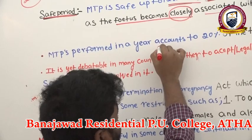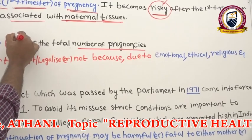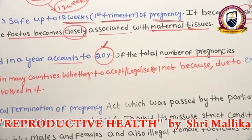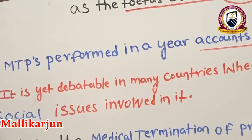MTP accounts for about 20 percent of the total number of pregnancies per year. While 20 percent are removed legally through MTP, more than 20 percent are removed through illegal means.